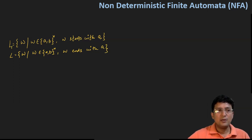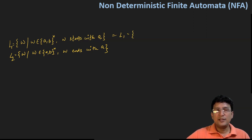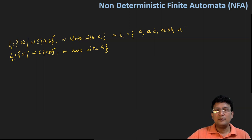Let's say the first language is L1 and the second language is L2. The set of strings in the first language would be any string that starts with A. For example, A itself, or it can be AB, or it can be ABB, or it can be AAB, or AAA and so on. You can see that the strings are always starting with the symbol A.